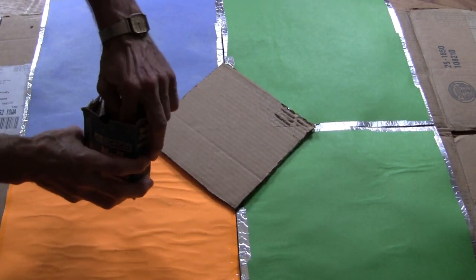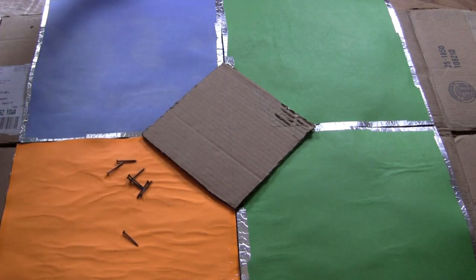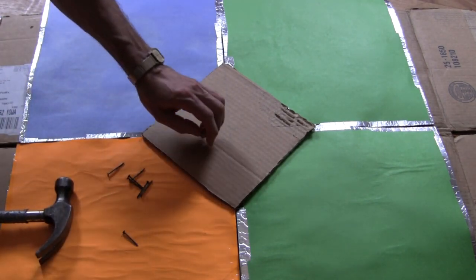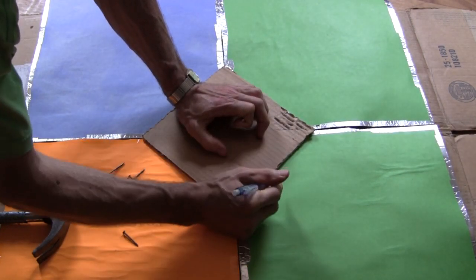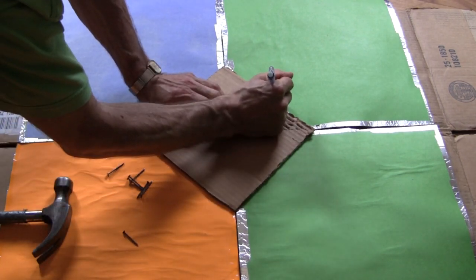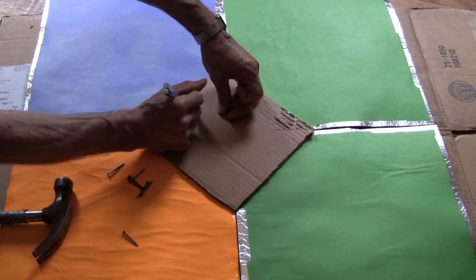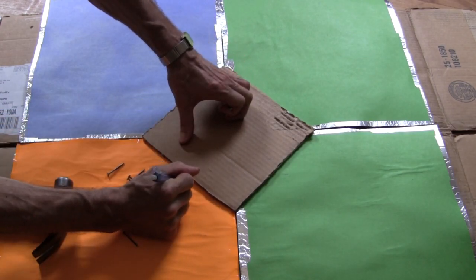Then take your nails. Actually before I do that I recommend you number. Put a 1 here and a 1 here on this panel, 2 here, 2 here. Because we're not going to be doing any precision here, so it's better if we remember which panel goes where on the base.